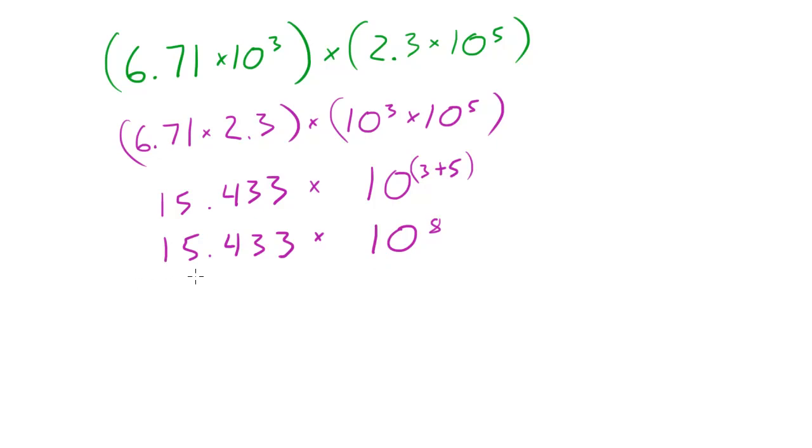And if we look at this, this is kind of in scientific notation already. The only thing we need to do is we need to change our decimal point from here to over here. So in order to do that we just go ahead and put 1.5433 times 10 to the ninth. Just like that. And this is our final answer. There you go. That's how you do that.